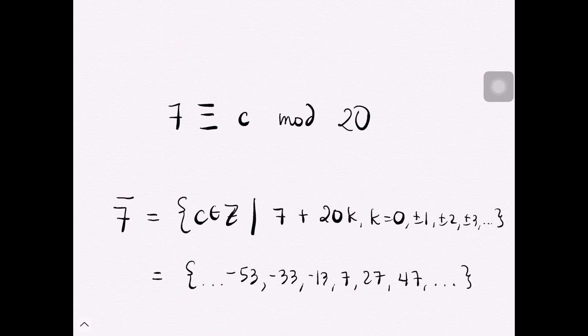So notice that when K is equal to 0, we have here the element 7. When K is equal to 1, we have here 27. When K is equal to negative 1, we have a negative 13. And having the rest of K will have these numbers. And like what we did earlier, to have these numbers, it's either adding or subtracting 20 from 7. Like 7 plus 20 gives us 27, plus 20 gives us 47. Having the other side, this would be 7 minus 20 gives us negative 13, minus 20 gives us negative 33, and so on.